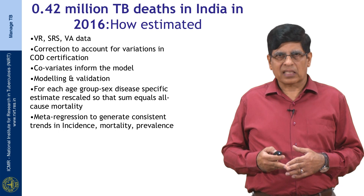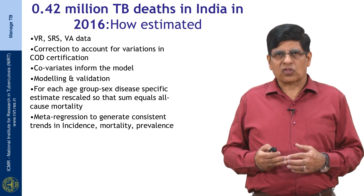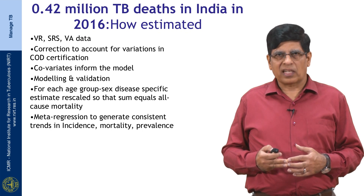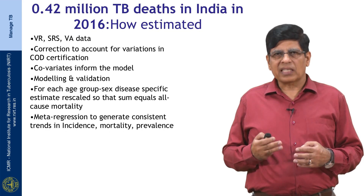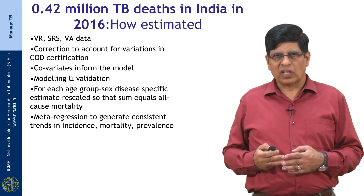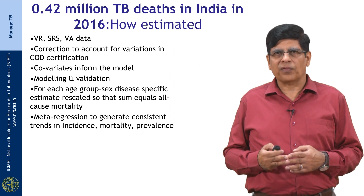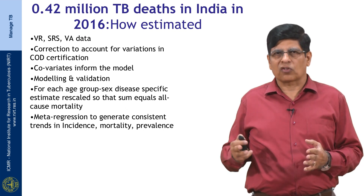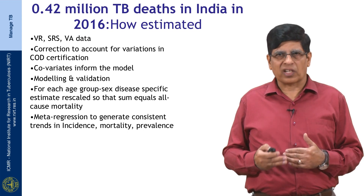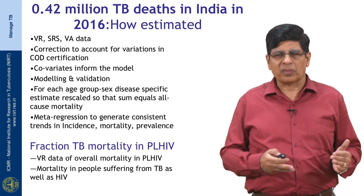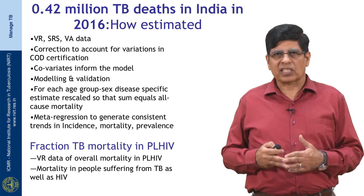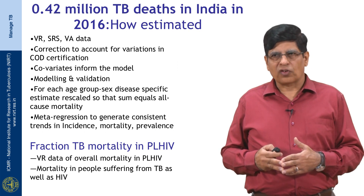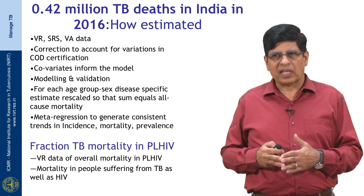The estimation of deaths is primarily based on vital registration data, sample registration surveys, verbal autopsy data, and medical certification of cause of death. This data is corrected for garbage coding, and modeling is applied to ensure that the sum of individual cause mortality equals all-cause mortality. Regression is then generated so that trends in incidence, mortality, and prevalence of TB are consistent with each other. Fraction of TB mortality in PLHIV is estimated from vital registration data of overall mortality in PLHIV and the proportion of PLHIV that suffer from TB.